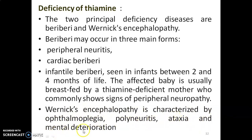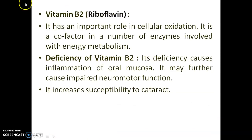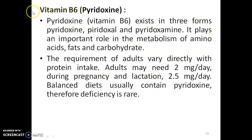Vitamin B2 — Riboflavin: it has an important role in cellular oxidation and is a co-factor in a number of enzymes involved with energy metabolism. Deficiency of vitamin B2 causes inflammation of the oral mucosa, impaired neuromotor function, and increases susceptibility to cataract.